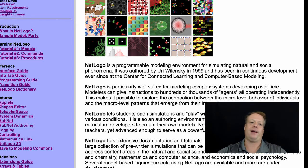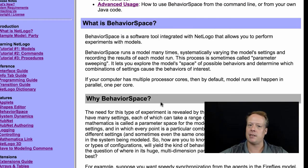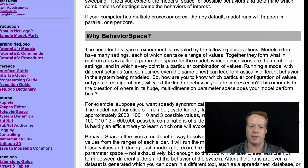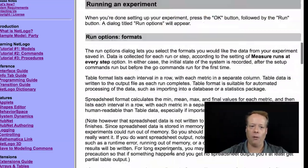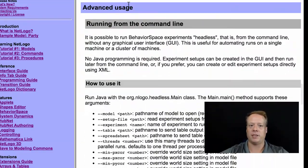So to find out more about headless running, what I highly recommend you do is go to the NetLogo user manual and click on behavior space because it's part of the behavior space code. And if you scroll almost all the way down to the bottom, you'll see this section called advanced usage running from the command line, often referred to as headless running.